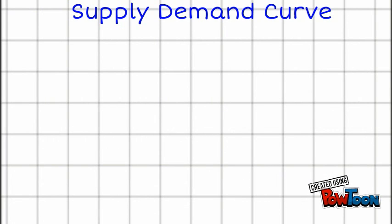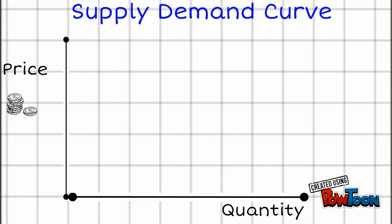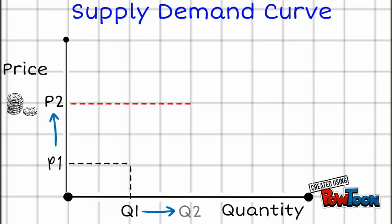Along the vertical axis we have price, along the horizontal axis is quantity supplied. If price rises, price goes up from P1 to P2, then quantity increases from Q1 to Q2.